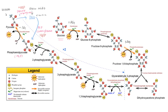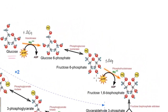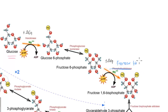So one roadblock down and two left to go. Once we have our phosphoenolpyruvate, we shuttle down this pathway until we hit our next roadblock: the conversion of fructose 1,6-bisphosphate to fructose 6-phosphate. Normally, phosphofructokinase converts fructose 6-phosphate to fructose 1,6-bisphosphate. But in gluconeogenesis, going the opposite direction, the body uses an enzyme called fructose 1,6-bisphosphatase.